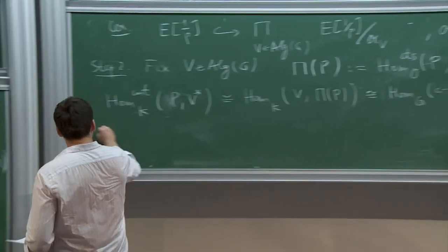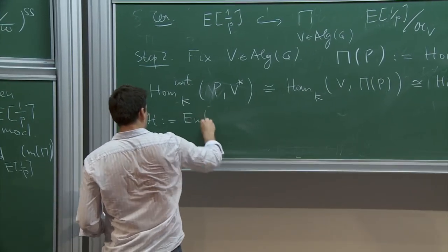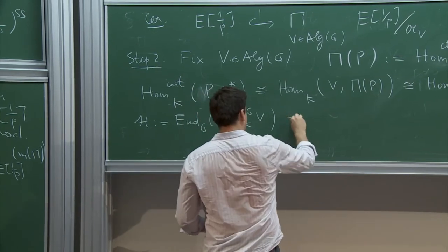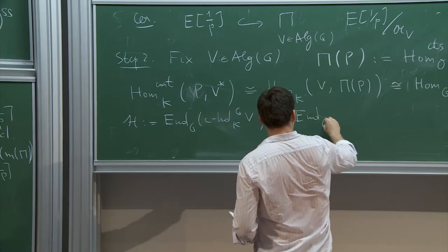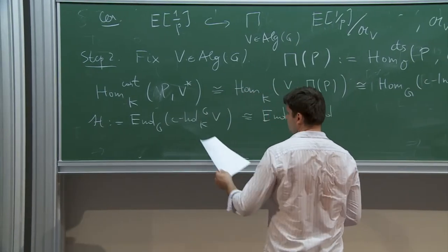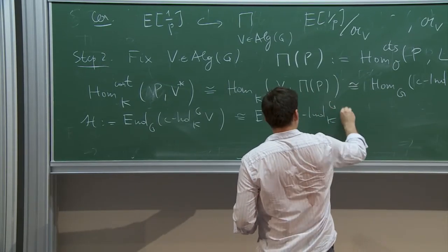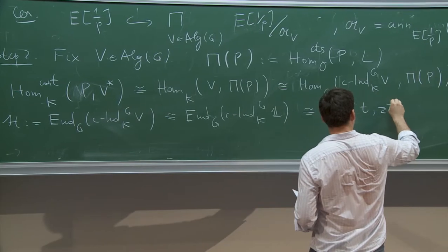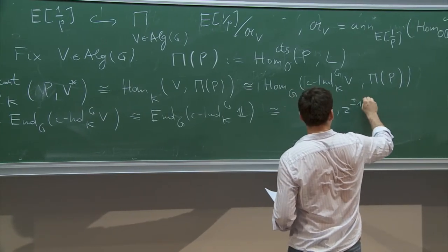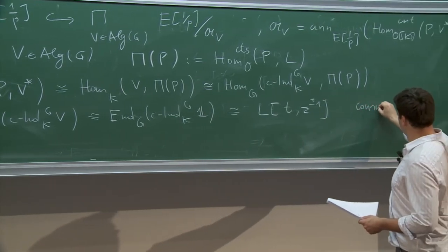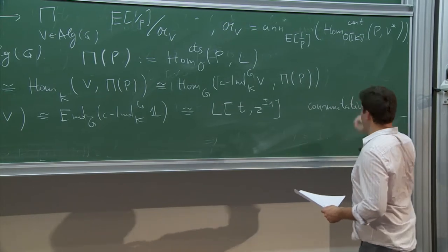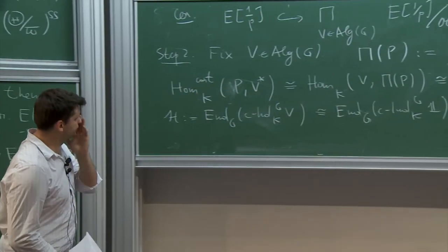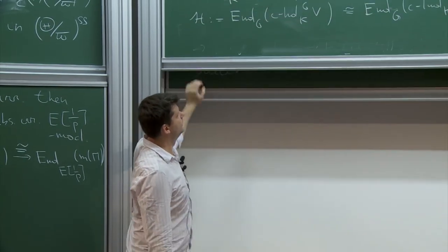Let H be the Hecke algebra, End_G(c-Ind_K^G V). This is a very classical object — since V is algebraic, c-Ind_K^G V is isomorphic to c-Ind_K^G(trivial), which is isomorphic to Z[T, T⁻¹] — wait, T plus-minus one — so H is commutative and a nice ring, and it acts on Hom_G(c-Ind_K^G V, π_P).